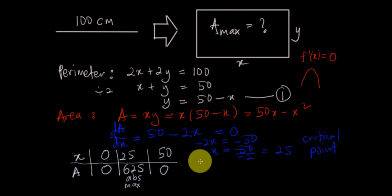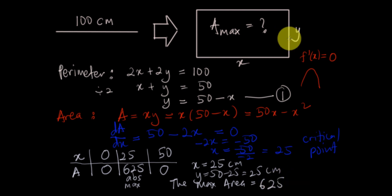So x is equal to 25. And because this one is cm we use cm also, so the maximum area is equal to 625. You multiply 2 lengths, so cm times cm becomes cm².